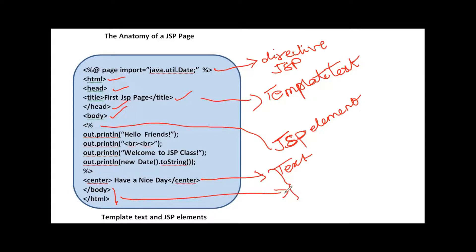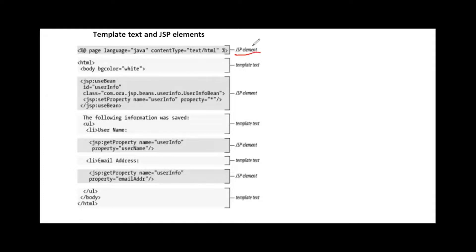A JSP page consists of JSP elements and template text. The template text can be HTML, WML, or plain text. In another example, the first part is a JSP directive element, followed by HTML code which is template text, then an action element — a JSP element — followed by more HTML template text, and then another action element.